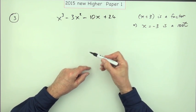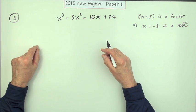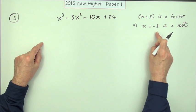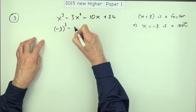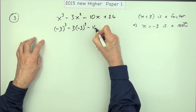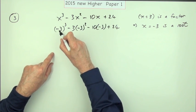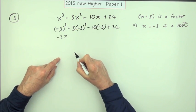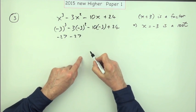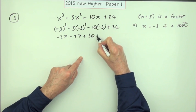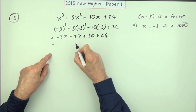Their first method — usually their preferred one, though it shouldn't really apply here — is to put negative 3 into the expression and see if it comes to zero. You'd evaluate: negative 3 cubed, minus 3 times negative 3 squared, minus 10 times negative 3, plus 24. That's negative 27 minus 27, but the middle term turns positive giving negative 27 plus 27, then plus 30, then minus 54 — so it comes to zero.